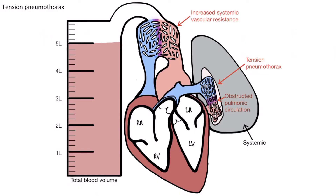This slide outlines the pathophysiology of obstructive shock, specifically due to tension pneumothorax. The mechanical obstruction prevents the heart from pumping blood, decreasing the cardiac output. This in turn causes activation of the sympathetic nervous system, which increases heart rate and systemic vascular resistance. In the mechanical type of obstructive shock, the primary physiological disturbance is decreased preload. In a tension pneumothorax, the decreased preload is explained by compression of the venous return to the right side of the heart. The increased pleural pressure also impedes blood flow into the pulmonary circulation, causing backup of blood into the heart, which further reduces preload.